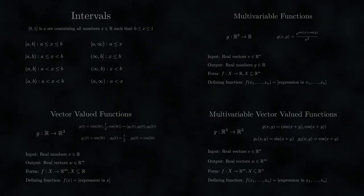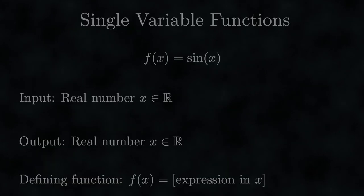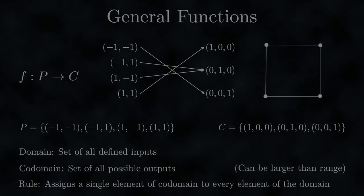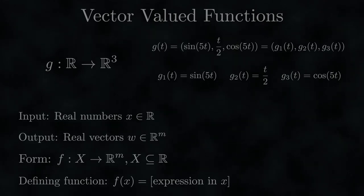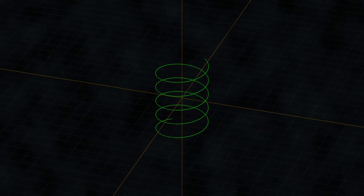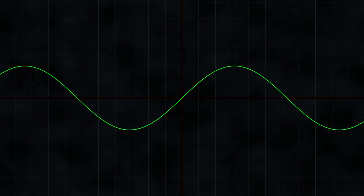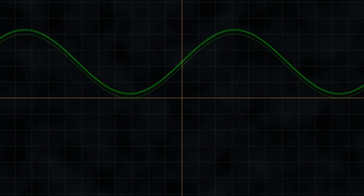Throughout this section, we've explored various types of functions — beginning with familiar single variable functions and progressively expanding to general functions, multivariable functions, vector-valued functions, and ultimately multivariable vector-valued functions. We've learned how to represent and visualize each type, which is invaluable for procedural texturing challenges. We also explored ways of transforming functions, equipping ourselves with additional flexibility. Now that we have a solid foundation in functions, we're ready to move on.